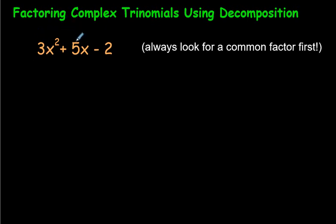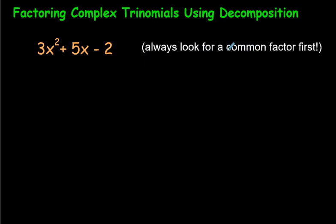If this is a, this would be b, and this would be c. Let's learn how to do these kinds of questions. Step number 1: always look for a common factor. Look amongst all of these 3 terms, and if they could all be divided by a number, you would factor that out in front. But in this case, 3, 5, and 2 do not have a common factor. That will often be the case, but sometimes you get one.